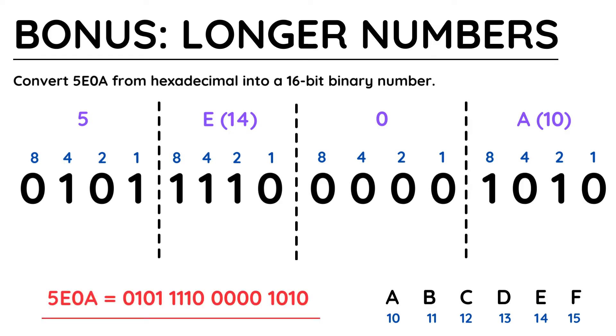And finally, A, which is 10, which is 8 plus 2. Writing out the answer, you can see how 16 bits have been used to represent 5E0A.